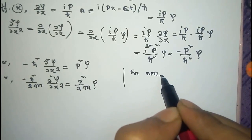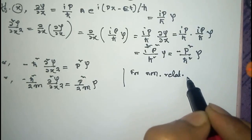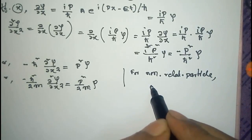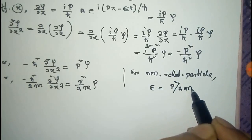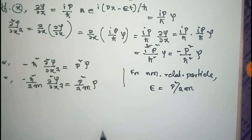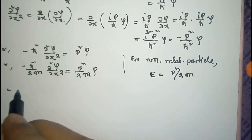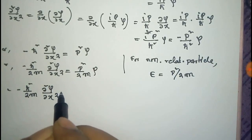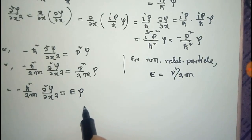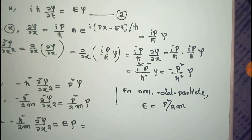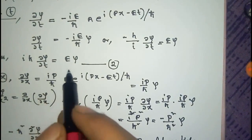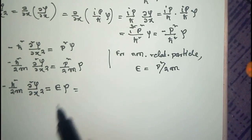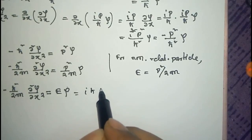For the non-relativistic case, in the particle nature, the kinetic energy can be represented by p²/2m. Substituting this condition p²/2m = E into the equation gives: −ℏ²/2m · ∂²ψ/∂x² = E·ψ. From equation number two, we can see that E·ψ = iℏ · ∂ψ/∂t.